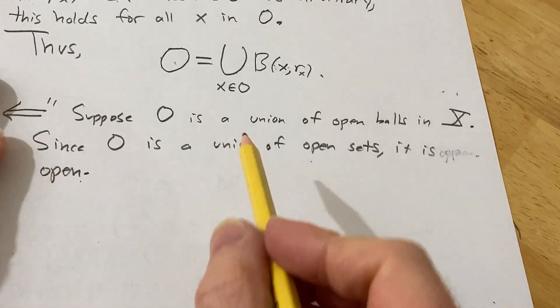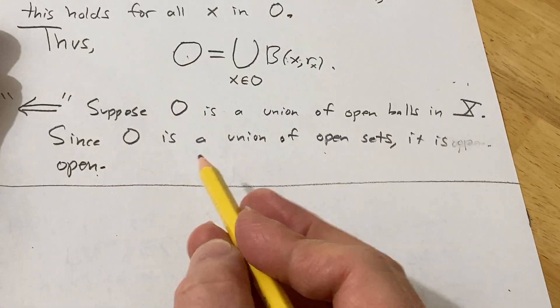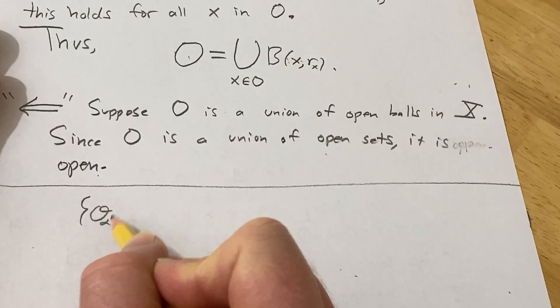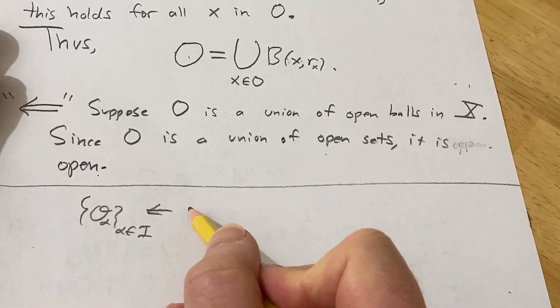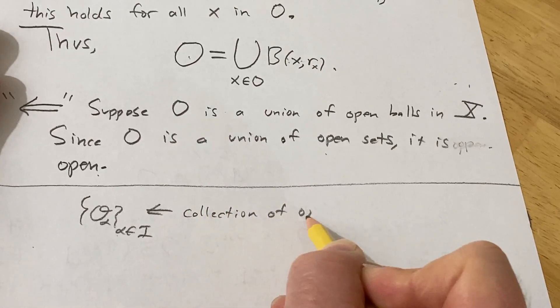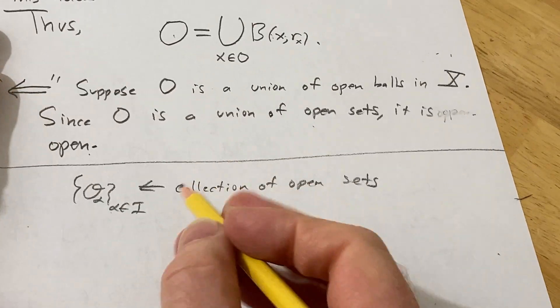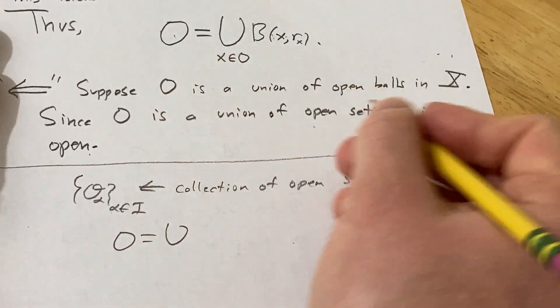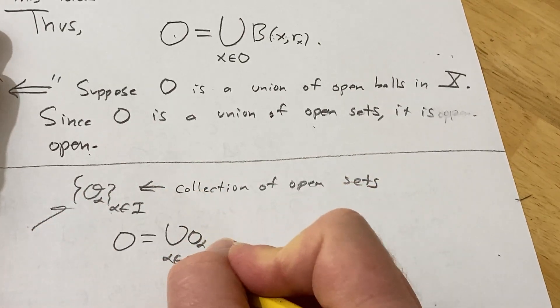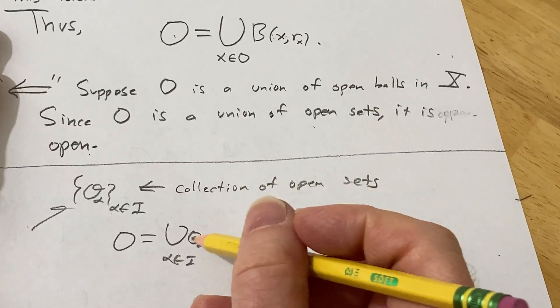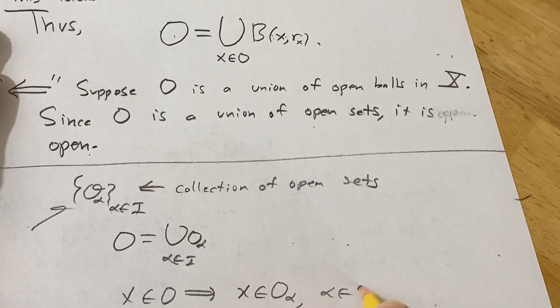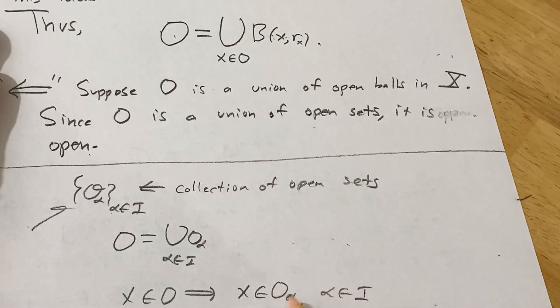What you would do is you would basically, let me just give you a proof sketch here for this direction, just in case you want to see it. So the proof sketch for this direction is you would say something like, okay, let O sub alpha as alpha runs through some index set be a collection of open sets. And then what you would do is O is a union of these balls. So suppose O is a union, say it's a union of these. So O is a union of open balls. And now what you do is you show that every point in here is an interior point. So you take an x in O, and that means that there's an x in some O sub alpha for alpha in I. Right, you don't know what it is, but there's just some of them.